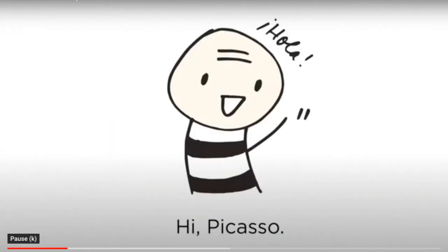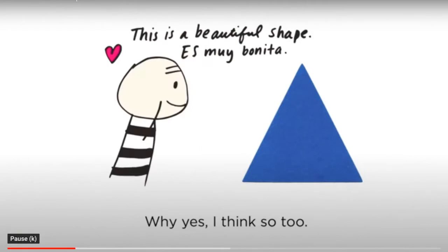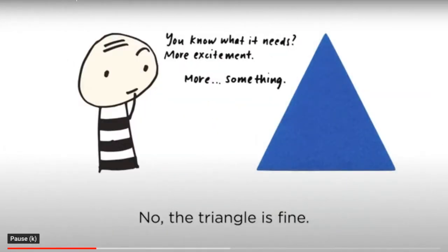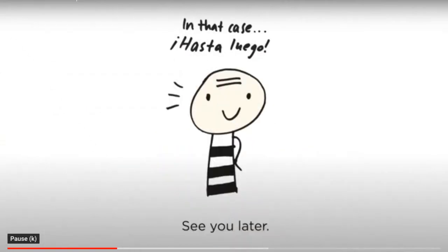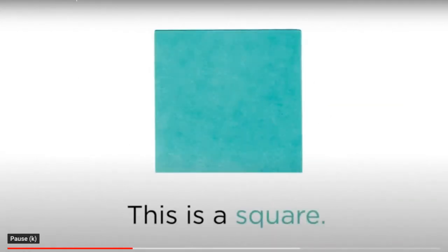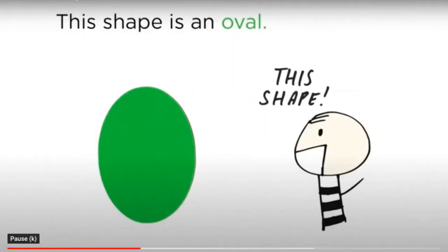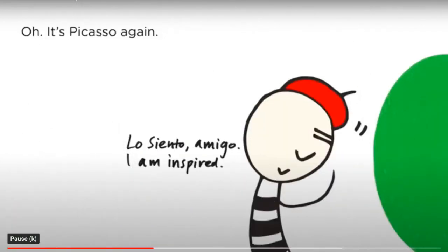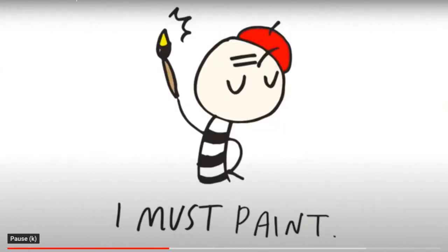Hi Picasso! Hola! This is a beautiful shape — it's muy bonita. Why, yes, I think so too. You know what? I need more excitement, more something. No, the triangle is fine. In that case, hasta luego! See you later. This is a square. This shape is an oval. Oh, it's Picasso again! Lo siento, amigo — I am inspired, I must paint!